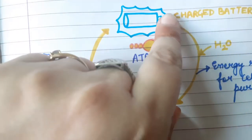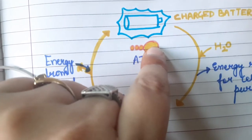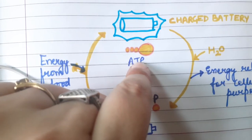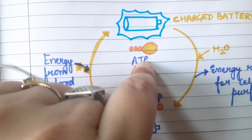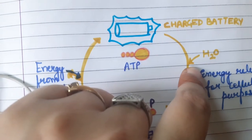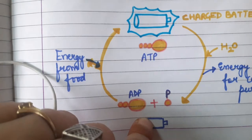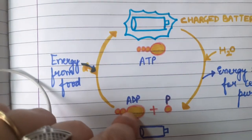In this case, the adenosine molecule is bound with three small phosphate groups and it is called ATP, adenosine triphosphate. Whenever we require energy, then by using water molecules, this charged battery discharges, the ATP changes.